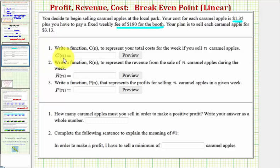So the cost function, C(n), equals $1.35 times the number of apples, which is n, plus the flat rate of $180. So this would be the cost function, C(n).